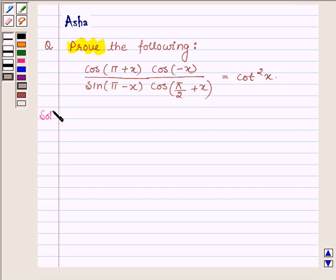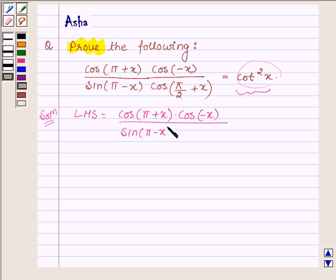So let us start with the solution. We will solve the left hand side of this problem and show that it is equal to the right hand side. So left hand side is cos(π + x) · cos(-x) / [sin(π - x) · cos(π/2 + x)]